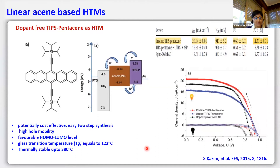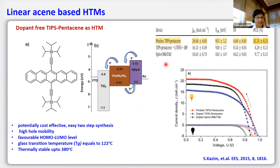In the search for alternative hole transport materials, we found a linear acene known as TIPS pentacene — not a new p-type organic semiconductor, as it had previously been used in field-effect transistors for its high charge mobility. We thought this molecule could be a good candidate to replace spiro-OMeTAD. It showed remarkable efficiency in 2015: high stability compared to spiro-OMeTAD, favorable energy levels, and most importantly it can be used without any dopant. In pristine form, efficiency reached around 12 percent using MAPbI₃, compared to about 10 percent for the spiro-OMeTAD control device.